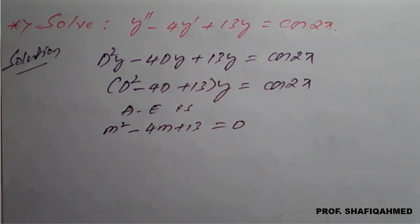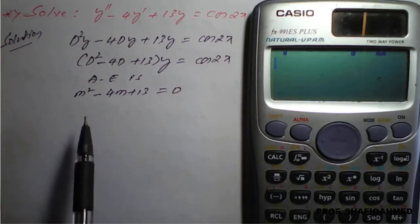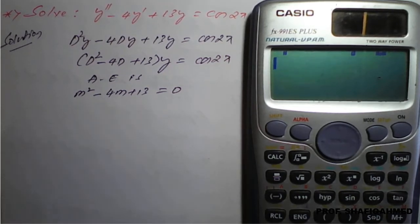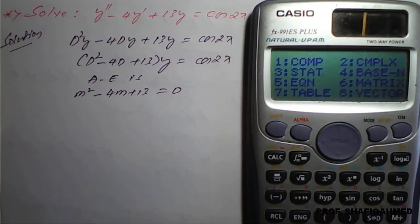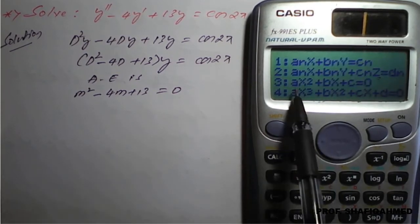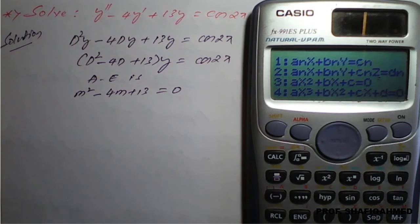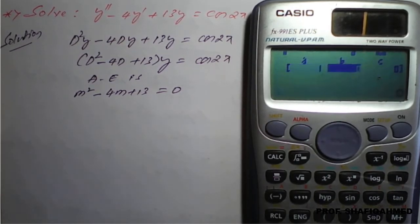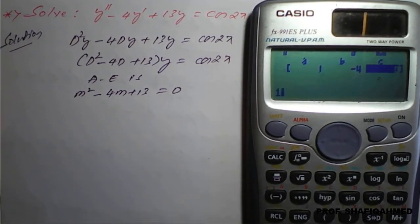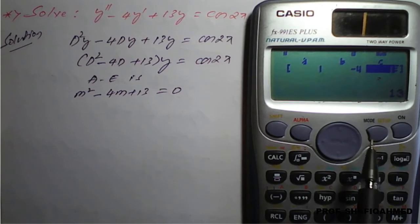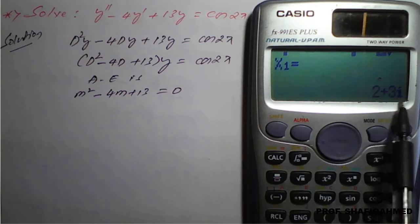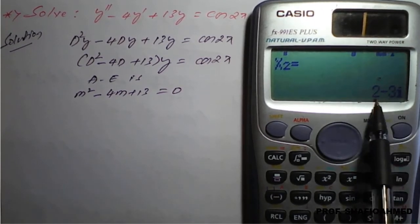Let us find the roots. Using a calculator: go to mode, then option phi, then option 3 because it is a quadratic equation. The coefficient of m squared is 1, coefficient of m is minus 4, and the constant is 13. We get roots 2 plus 3i and 2 minus 3i.